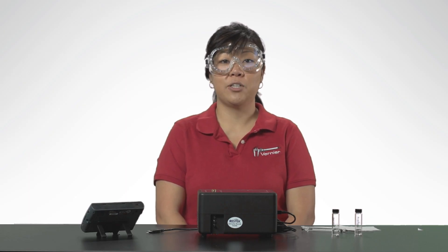The Mini-GC Plus can detect and distinguish between families of compounds such as alcohols, ketones, esters, and halogenated alkanes.